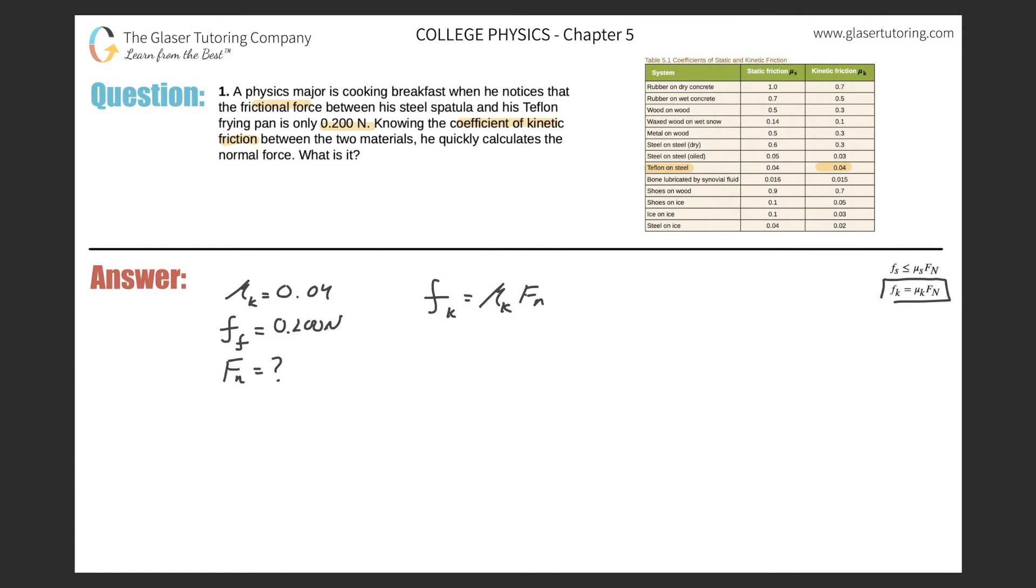The frictional force, the kinetic frictional force, is 0.200. The constant is going to be 0.04. And the normal force is going to be the unknown. So simply, all we have to do here is just divide by the 0.04.